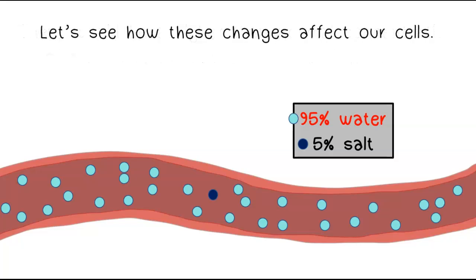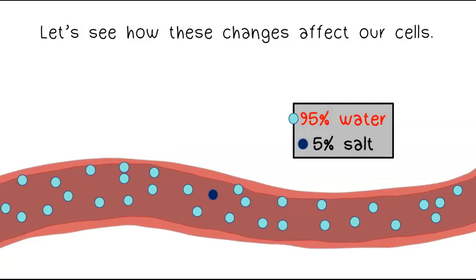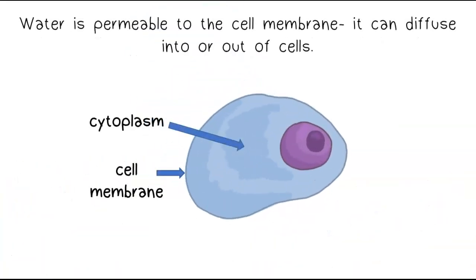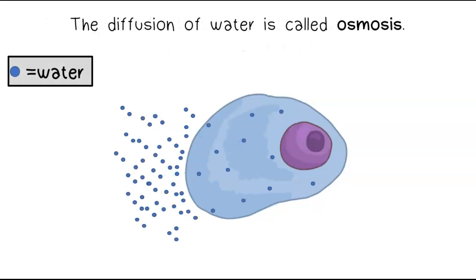Let's see how these changes affect our cells. Water is permeable to the cell membrane. It can diffuse into or out of cells. The diffusion of water is called osmosis.